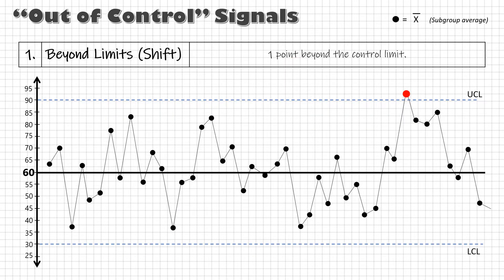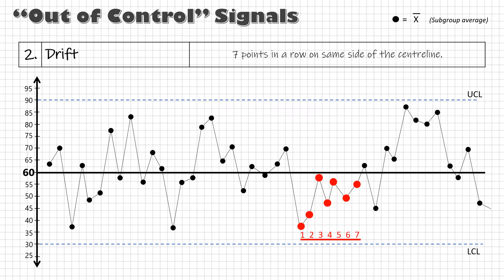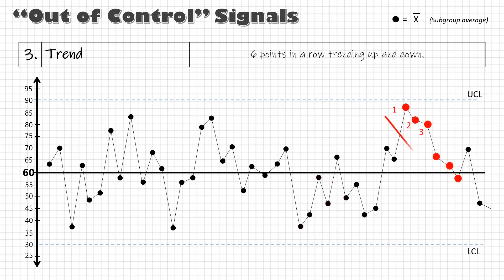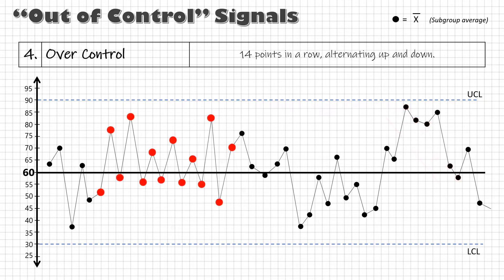Number 1 is beyond limit. We have seen that. Second is trend. Seven points in a row on the same side of the center line. Then we have trend. Six points in a row trending up or down. Fourth is over control. Fourteen points in a row alternating up and down.